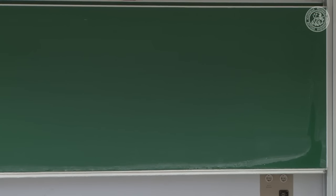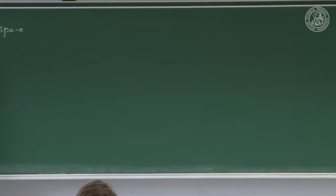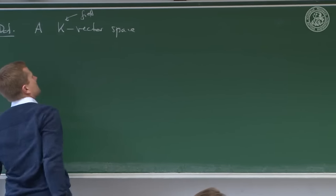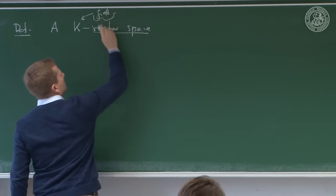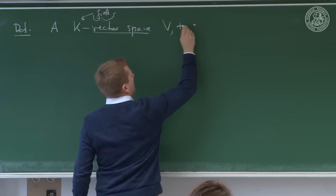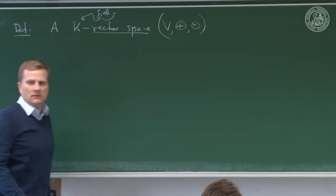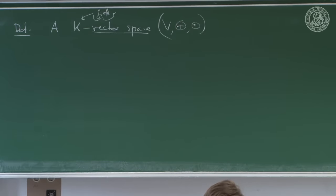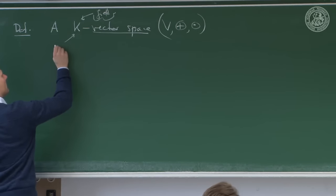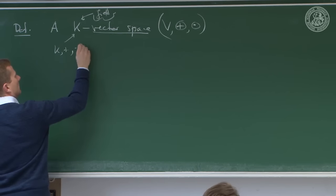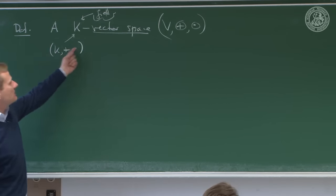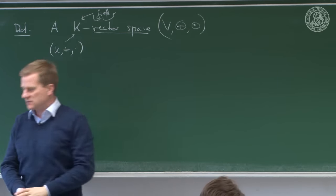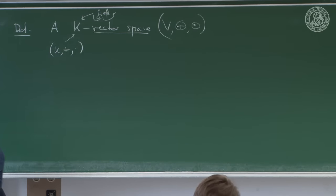Now we zero in on fields and the definition of a K-vector space. A K-vector space — where K is a field — is also a triple. The field K has operations plus and times, and the vector space has its own operations, which are entirely different: the vector addition is not the field addition, and the scalar multiplication is not the field multiplication.